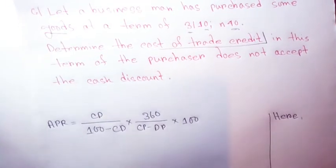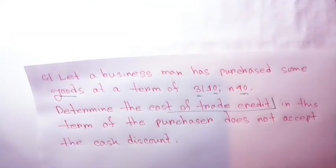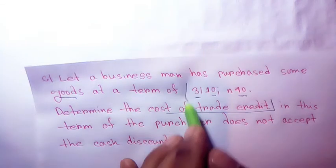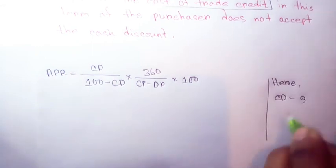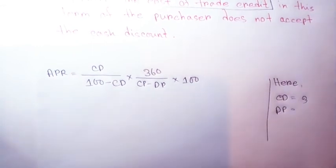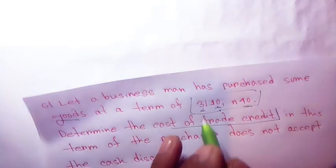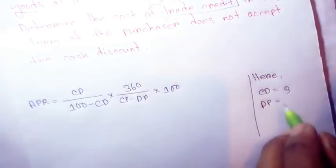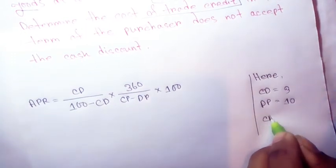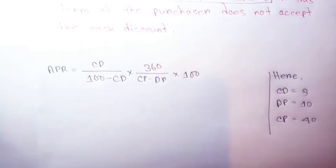The formula is: CD divided by (100 minus CD), multiplied by 360 divided by (CP minus DP), into 100. Here CD is the cash discount percentage, DP is the discount period which is 10, and CP is the credit period which is 40.